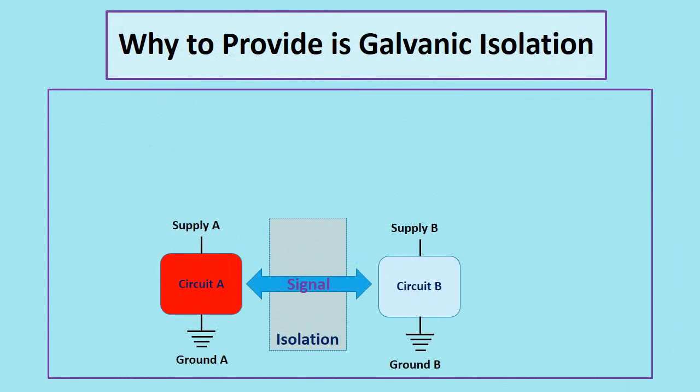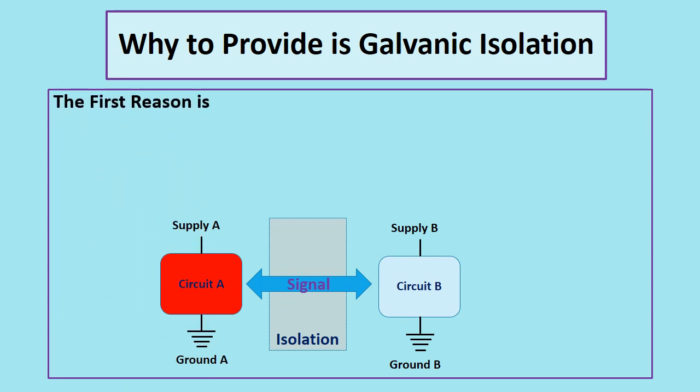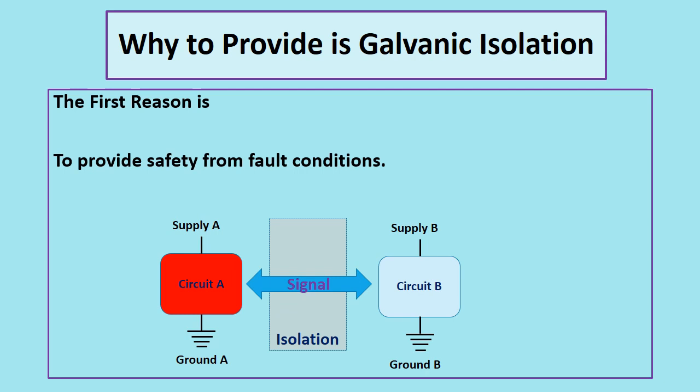Why provide galvanic isolation? There are two reasons for providing isolation. The first reason is to provide safety from fault conditions. If two circuits are isolated, then a fault in one of them will not affect the other circuit.